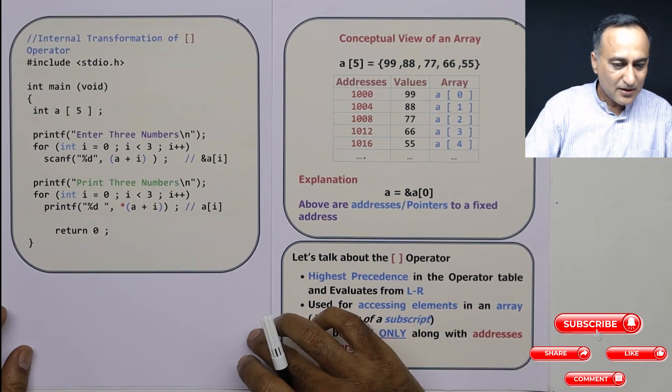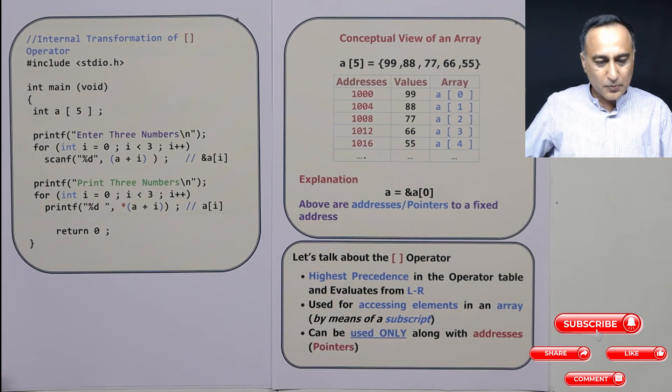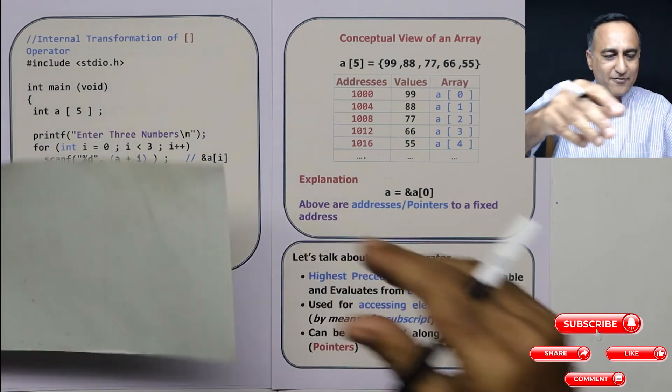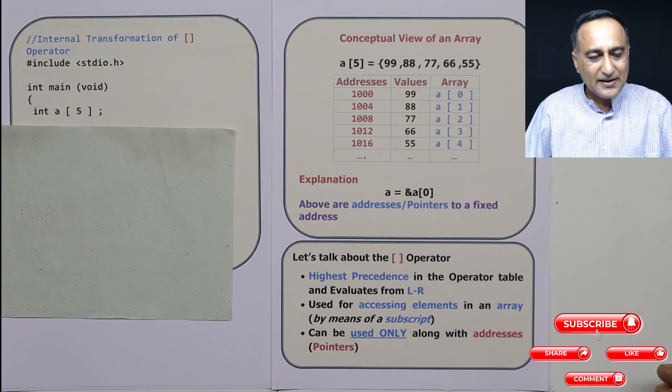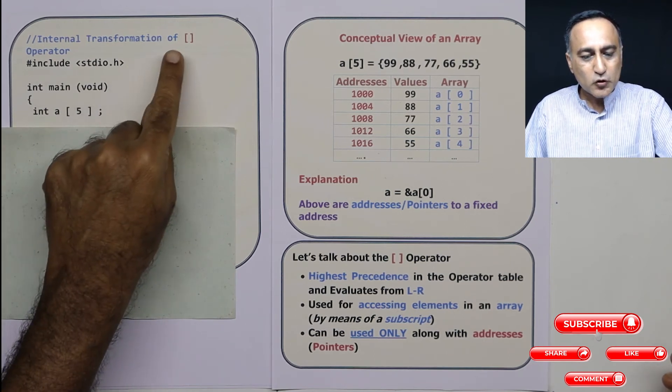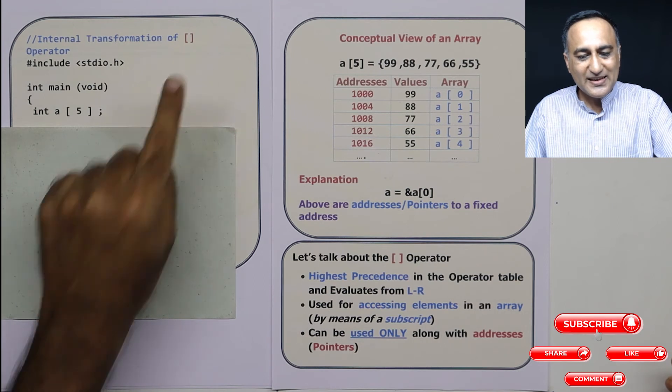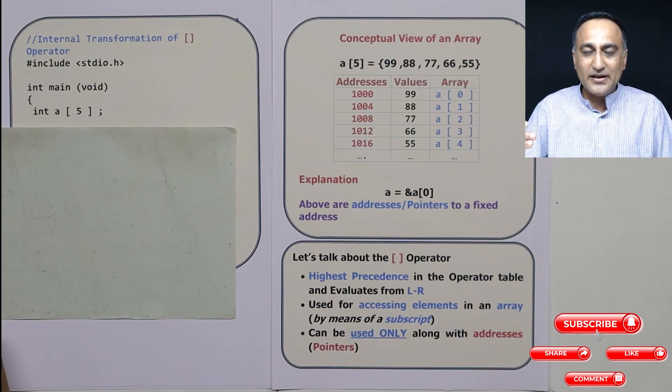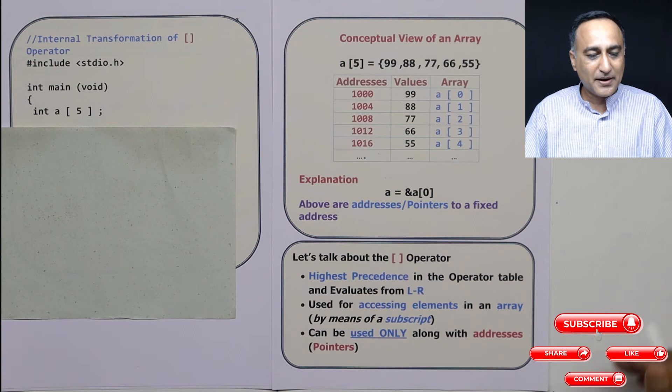Now, let us say I have this particular program. I have declared int A of 5. Now I am going to show how this square bracket is internally converted into something different by the compiler.